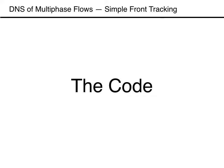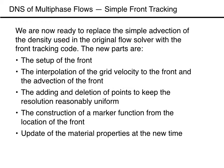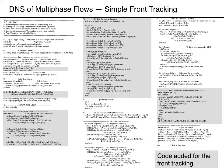We can now modify our code and replace the simple advection equation for the density by the front tracking approach. To do so we need to add four new parts: the first is the setup or initialization of the front, then we need to interpolate the grid velocity to the front and advect the front, after that we construct the marker function from the location of the front, and finally we need to add and delete points at the front to keep the resolution reasonably uniform. The full code is shown in this slide where the new parts are identified by the grey background.